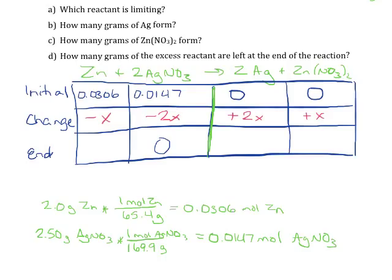In order to do that calculation, we would have 0.0147 minus 2x equals 0. That means that x is going to be equal to 0.00735 moles. That is the x we're going to be using for all of these calculations. For the zinc, that means we're going to have 0.0306 minus 0.00735, which gives an answer of 0.02325 moles.